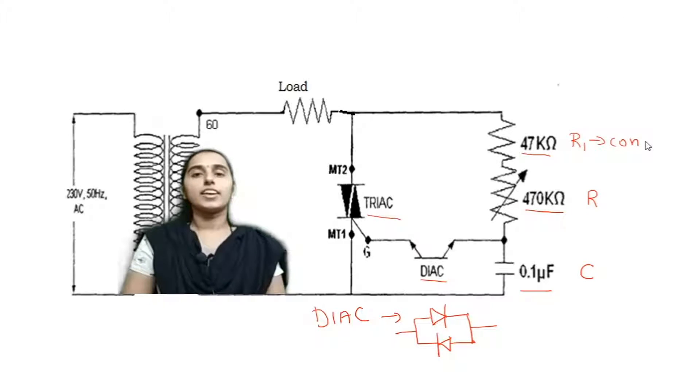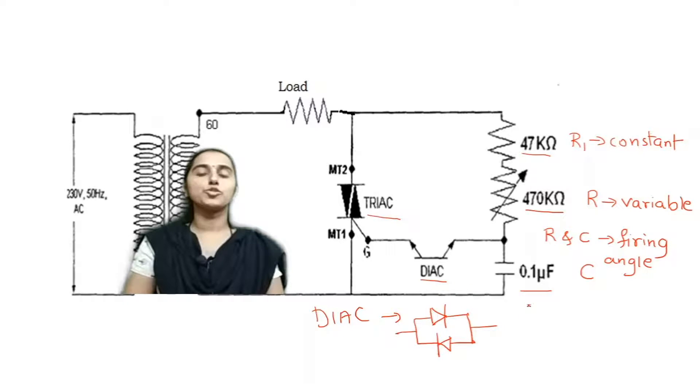AC voltage controllers are widely used in our day-to-day life, for example in fan regulators, heat converters, and light dimmer circuits. In this video, I will explain AC voltage controller using TRIAC.